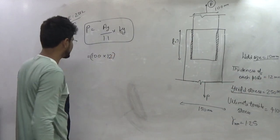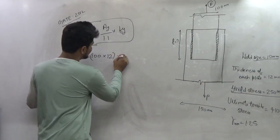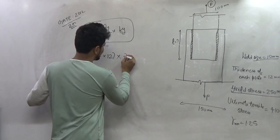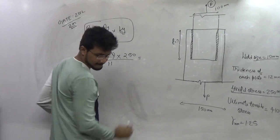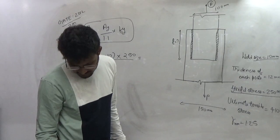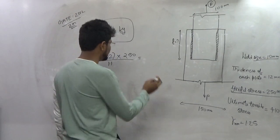So this is the gross cross sectional area of the plate into yield stress of the material which is 250 divided by 1.1. So this value comes equal to 272.72 kN.